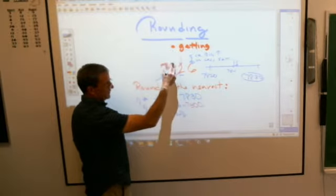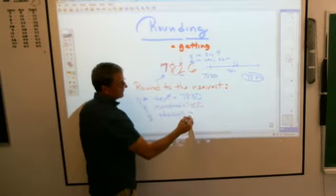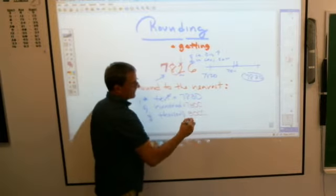8,000. Why is that? Because of what number? 8. Yes, because this 8 is 5 or bigger. That means that it's going to be 8,000.